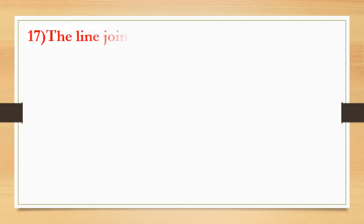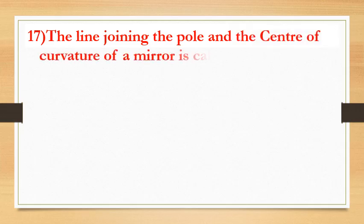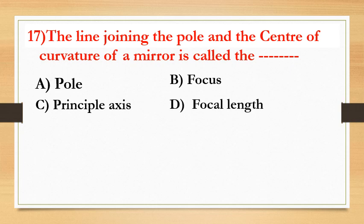The line joining the pole and the center of curvature of a mirror is called the — options are: pole, focus, principal axis, or focal length. The answer is principal axis.